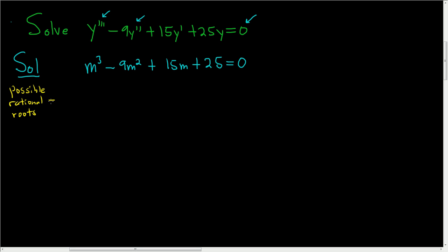Let's look for the possible rational roots. You look at the last number here, so 25, and you look at the coefficient here, so 1. It's always the last over the first. So the factors of 25 are plus or minus 1, plus or minus 5, and then plus or minus 25. And then you divide by the factors of this guy here, so plus or minus 1.